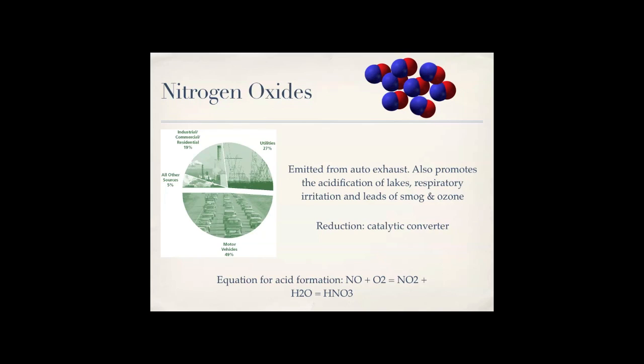Nitrogen oxides are emitted from auto exhaust. They promote acidification of lakes through acid deposition, cause respiratory irritation, and lead to smog and ozone formation. The way to reduce this is through a catalytic converter — see the equation on screen.